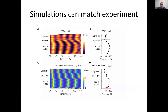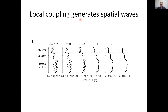We can quantify these movies and show that the experimental waves we see going down from the hypocotyl into the root and up from the root tip can be matched qualitatively in our simulations. The fun thing with the simulation is we can play with the level of local coupling and see how it affects the spatial waves. Without local coupling and just with the different sensitivities to inputs, you don't get spatial waves. But as you increase the strength of the local coupling, the spatial waves start to form.